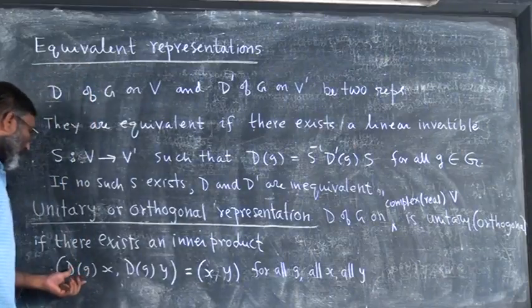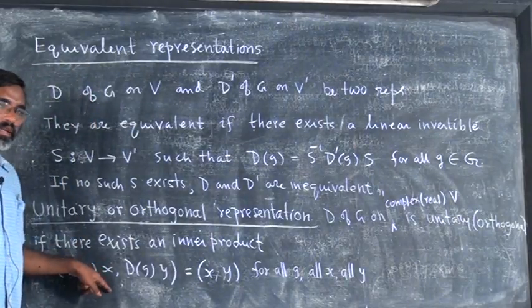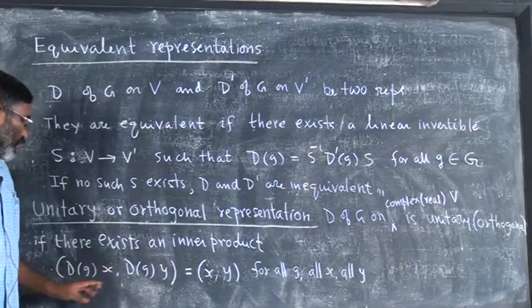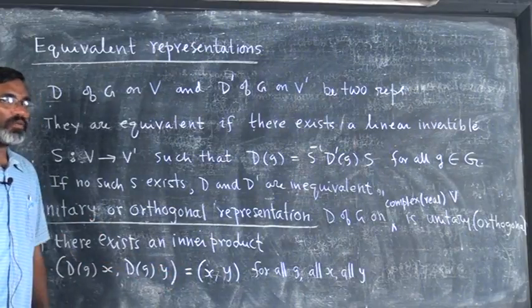So d of g x will map x to another vector in v, so is this. So d of g x, d of g y is x y.